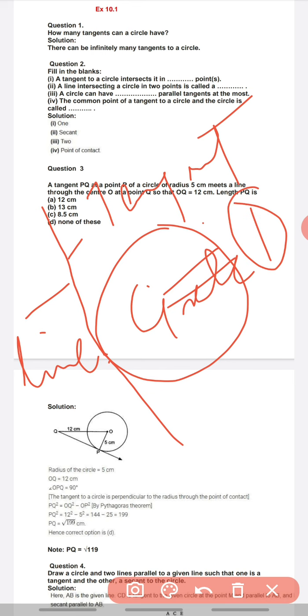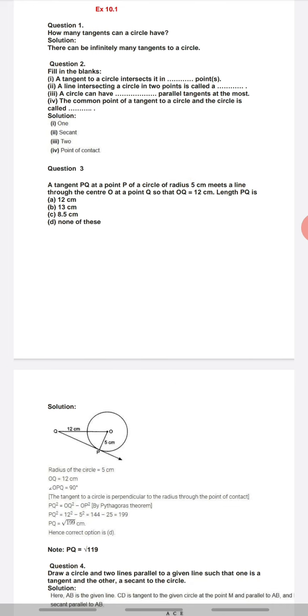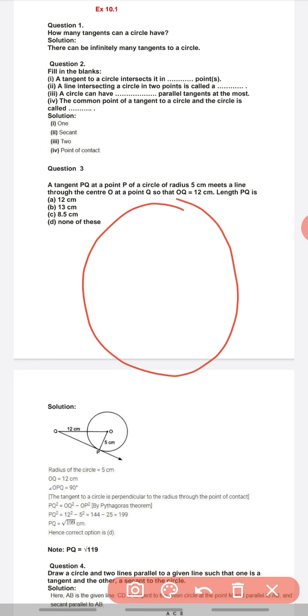To us line ko tangent bolte hain. Now the question here is, if you have a circle, how many tangents can we draw? Since the definition of circle means that it is a locus of points, a collection of points, that means in this circle infinite number of points lie.